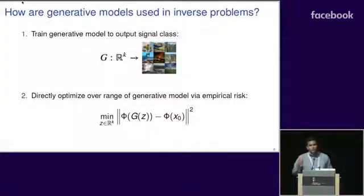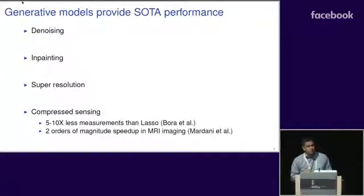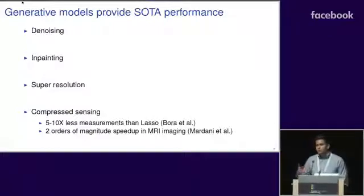I stated it with a generic Φ map here, so this formulation is actually quite versatile, allowing the use of different measurement modalities. Just to give examples of where these types of generative models have provided state-of-the-art performance, we talked about these common image processing problems: denoising, inpainting, and super-resolution.